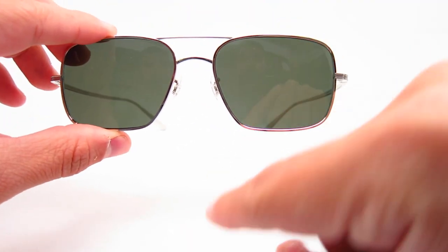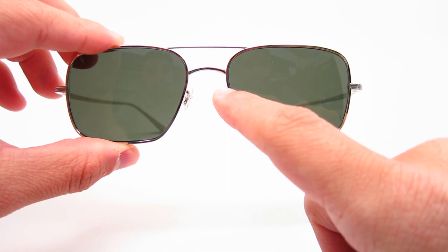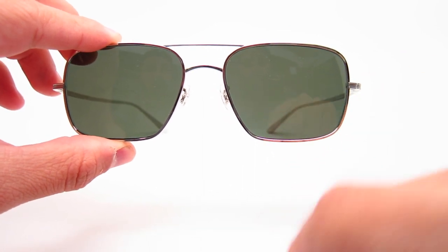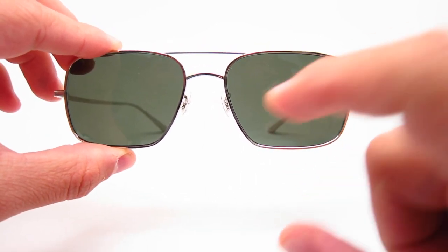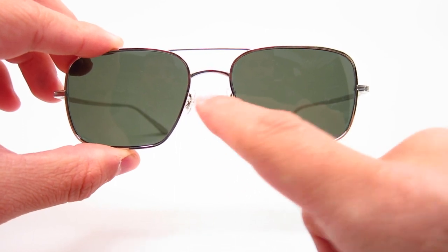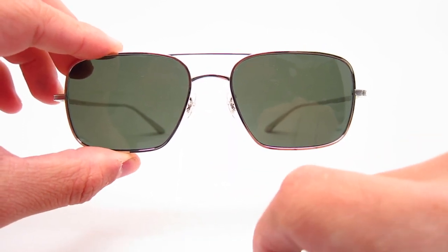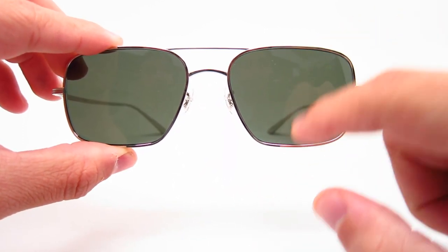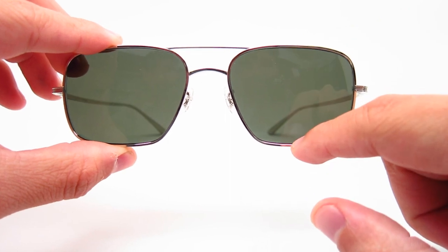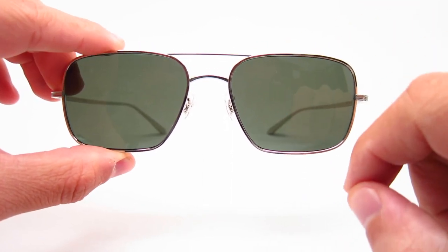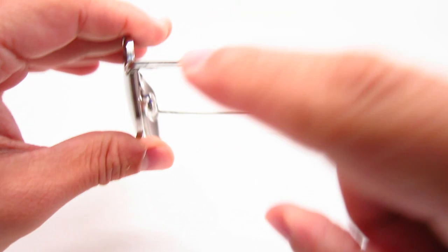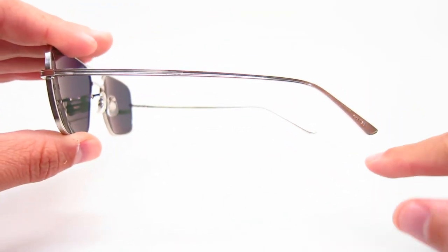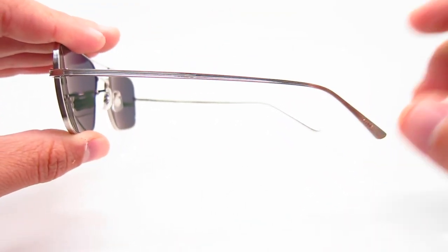With the sizing, the lens width is 54 millimeters. The bridge width is 17 millimeters. The height of the lens is 40.8 millimeters. And the temple length is 145 millimeters.